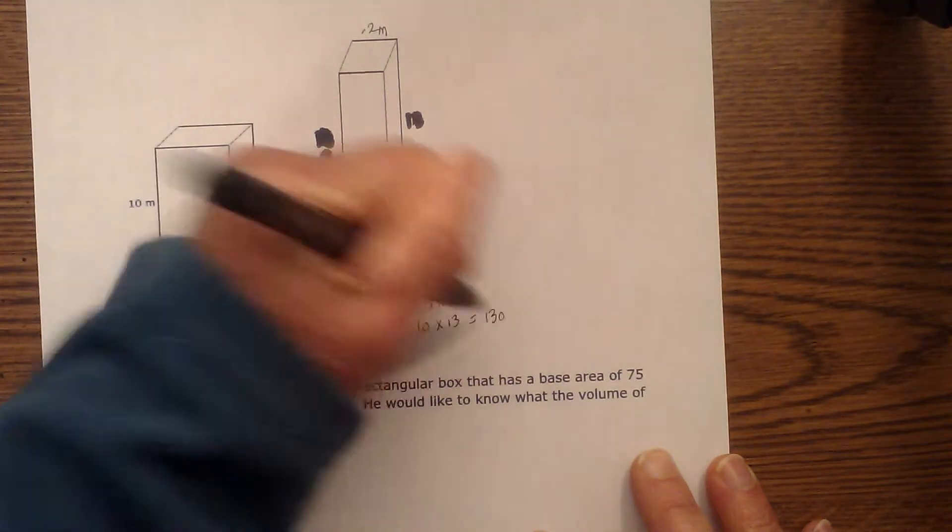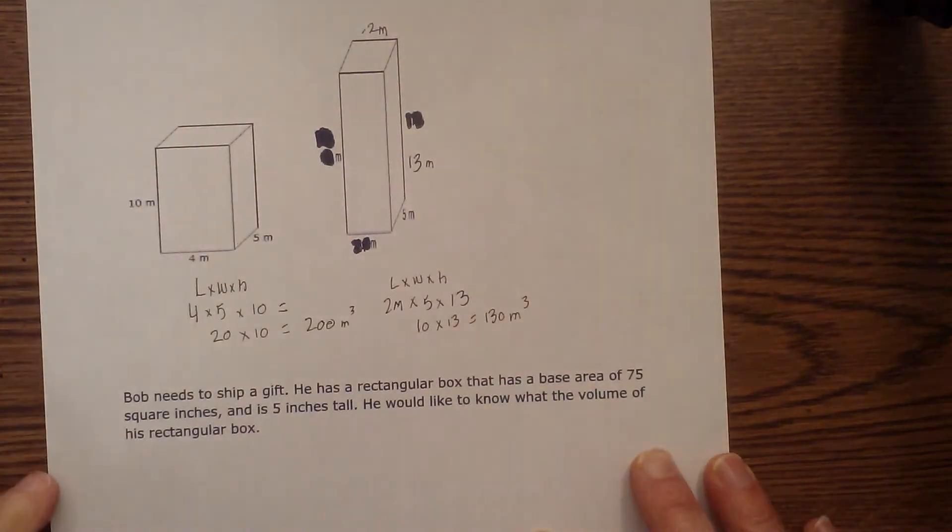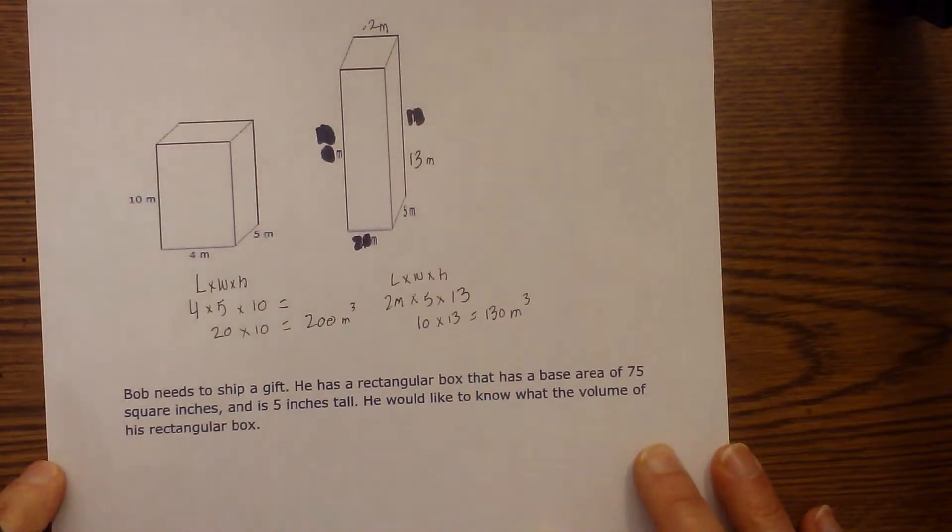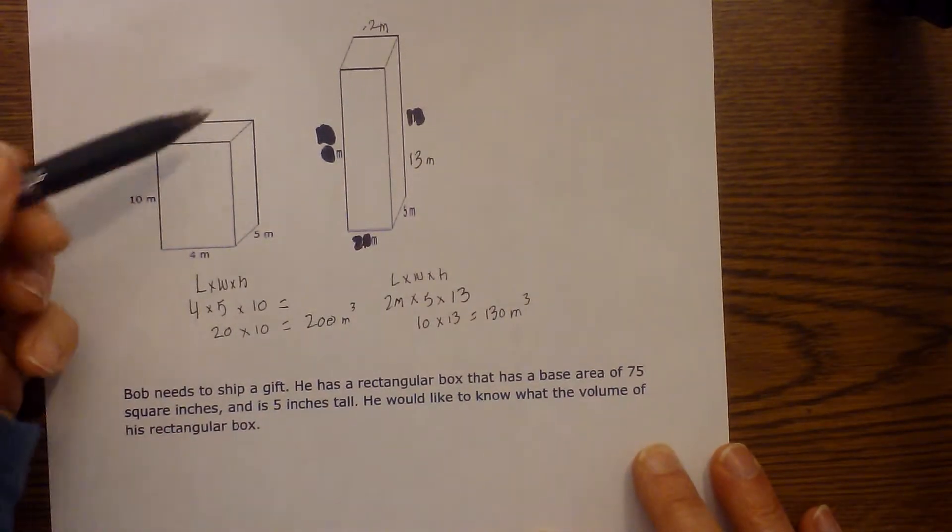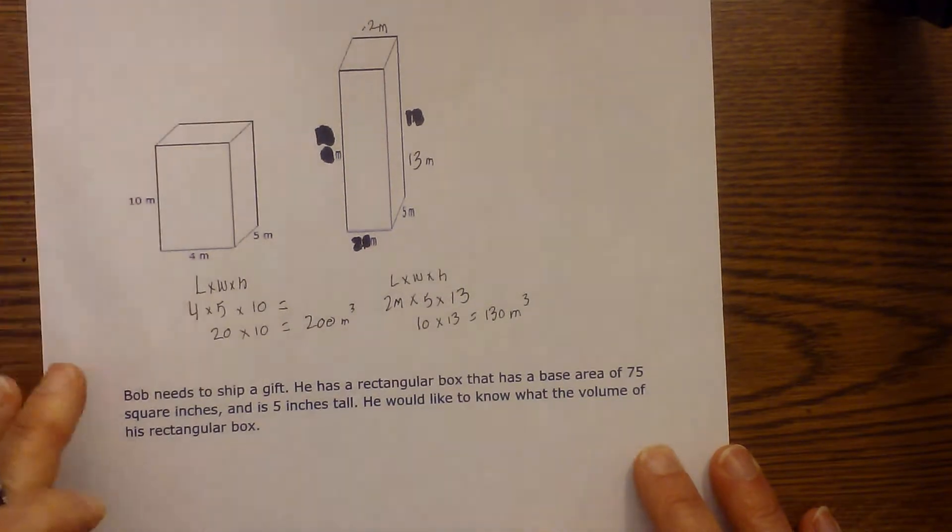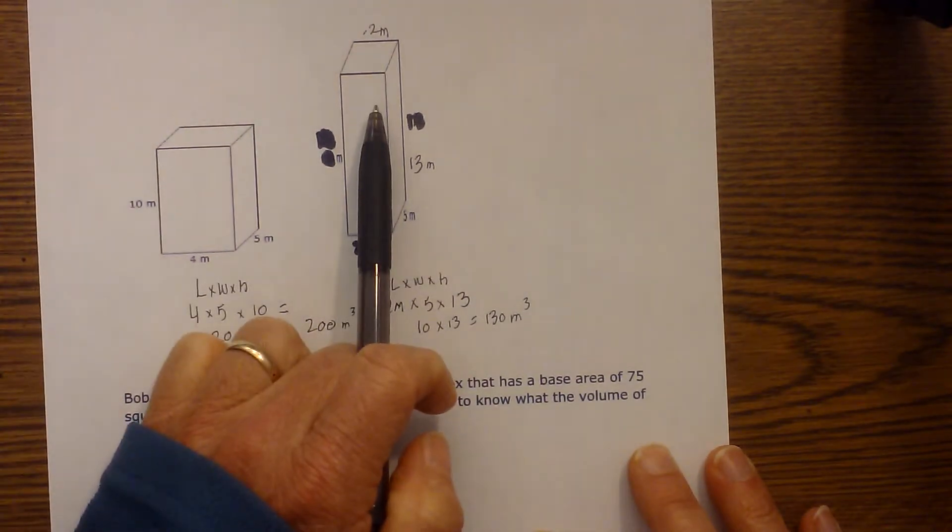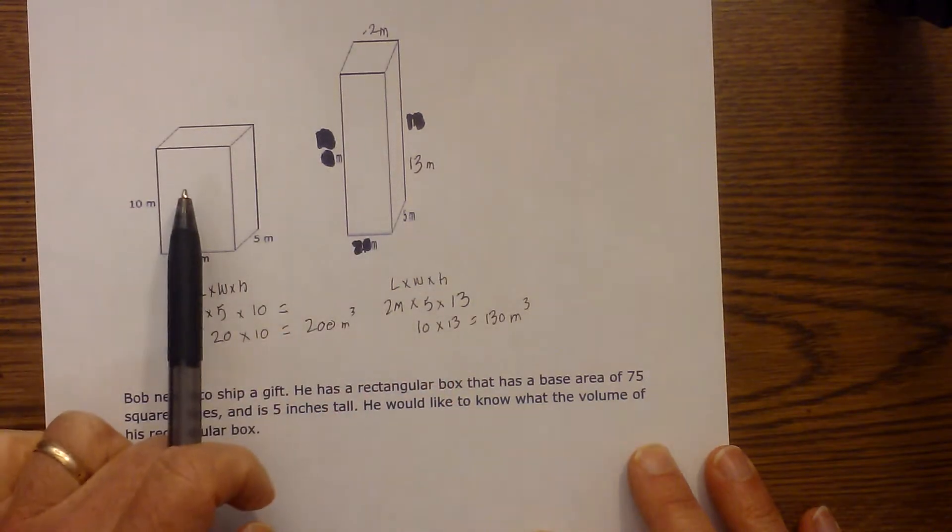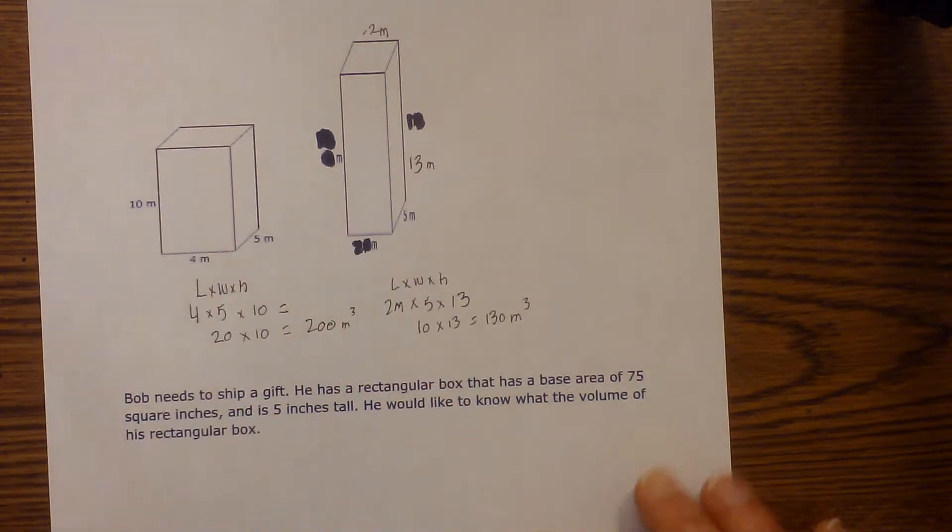Ok, now that's a lot of times why restaurants will have the containers tall and narrow because it appears that this would have a greater volume. But in reality, this one here does.